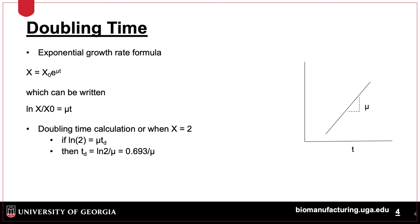To better understand the growth characteristics in culture, doubling time can be calculated according to the formula where the initial cells increase by the factor e to the mu*T, where mu is the specific growth rate and T is time. The doubling time can be calculated if mu is known using the formula: doubling time equals the natural log of 2 divided by mu.